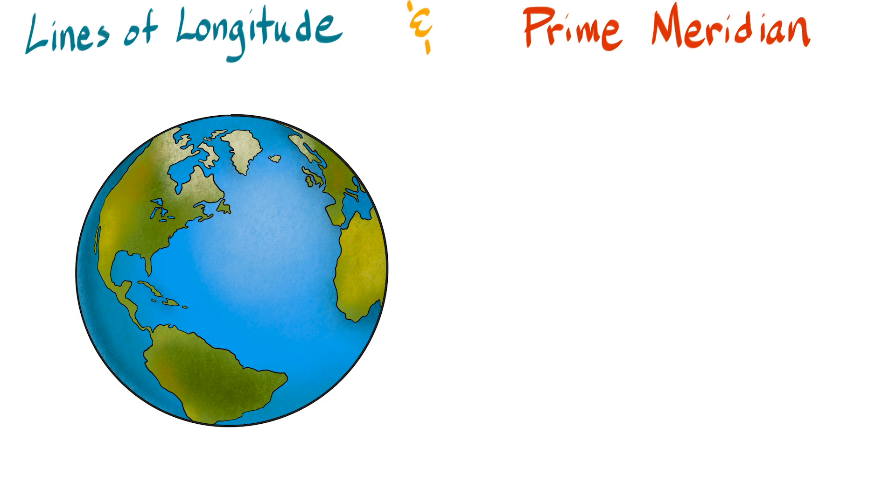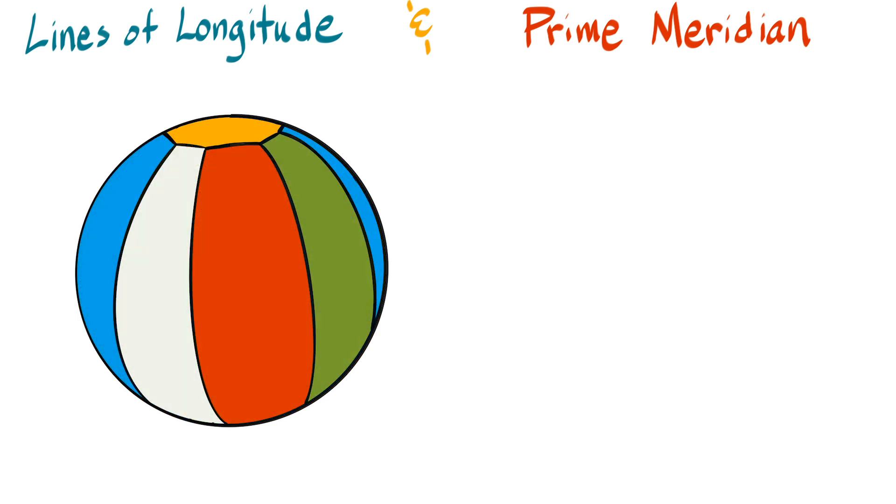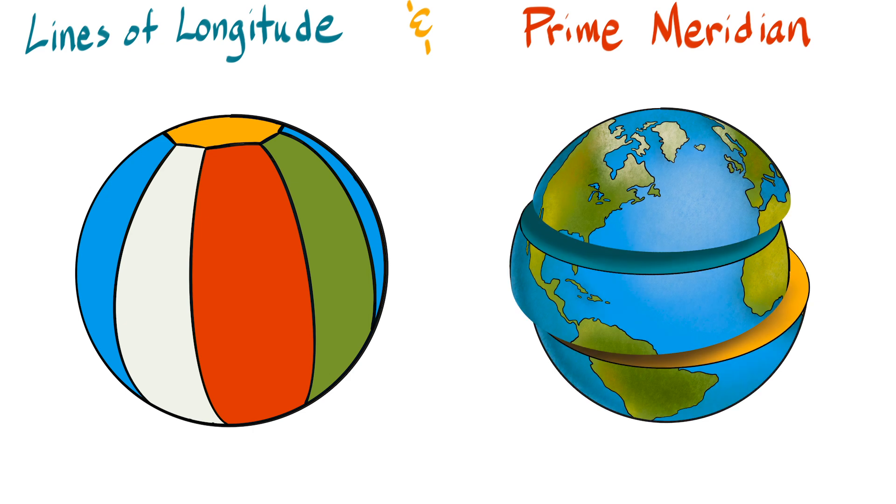So drawing lines of longitude on a sphere kind of makes it look like a beach ball, whereas drawing lines of latitude just kind of cut the sphere into layers like a cake.